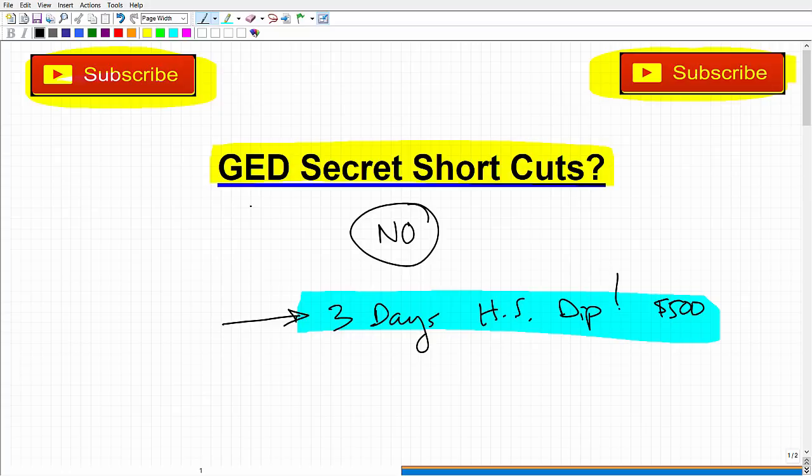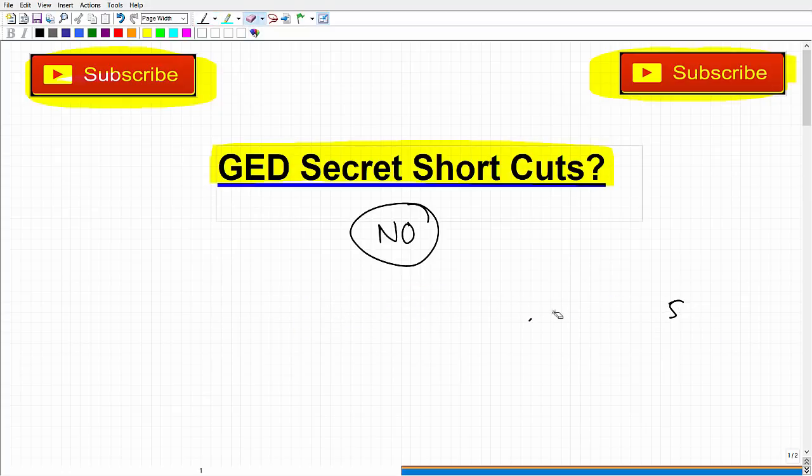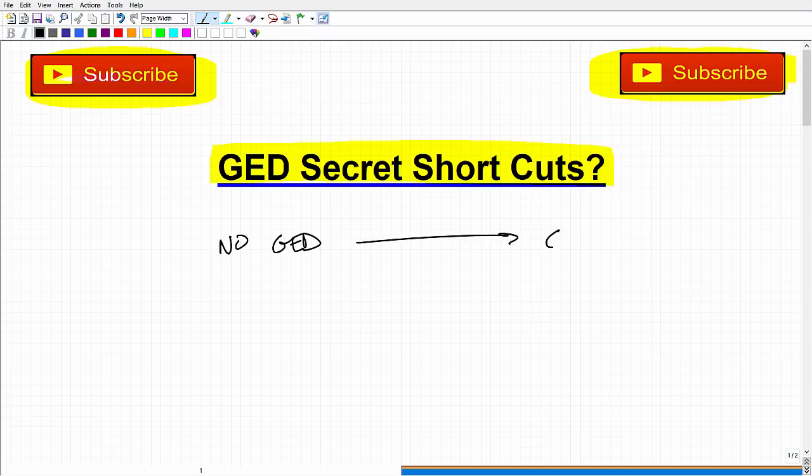So what does work? So let me go ahead and just erase this here. And I've done a lot of videos on this. What's the quickest way from no GED, if you will, to having a GED? Well, the only secret shortcut that I know of is doing it right the first time. And what I mean by that is not dragging the process out by trying to look for shortcuts.